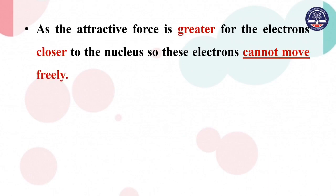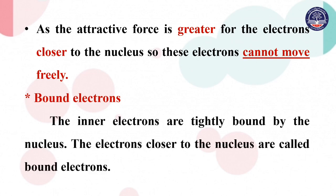As the attractive force is greater for electrons closer to the nucleus, these inner electrons cannot move freely — they are tightly bound by the nucleus. The electron closer to the nucleus is called a bound electron.